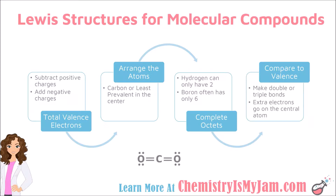The first thing that you do is total the valence electrons. You can determine valence electrons from the location of an element on the periodic table, and you would want to add those up for all of the elements present in the molecule. Once you have done that, if there is a charge, a positive charge gets subtracted from your total because a positive charge means that you have lost electrons. A negative charge gets added to your total.